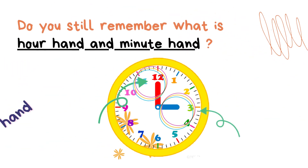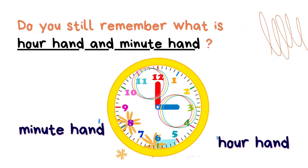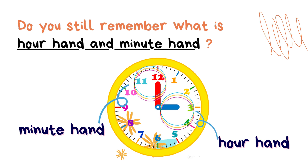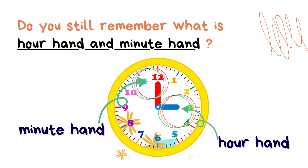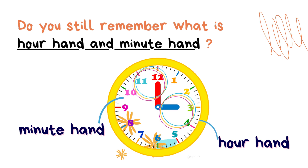Do you still remember what is hour hand and minute hand? Well, the hour hand is the short hand on the clock face, while the minute hand is the long hand on the clock face. As shown here in the picture, the hour hand is the short one with the blue colour, while the minute hand is the longer one with the red colour. Hour hand and minute hand.